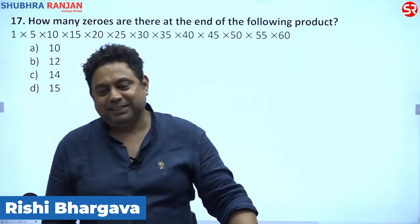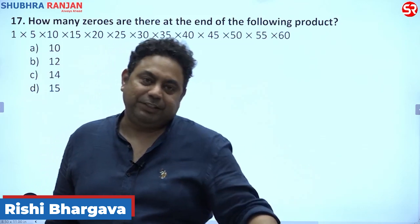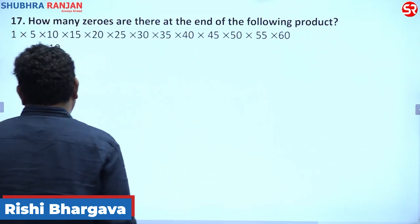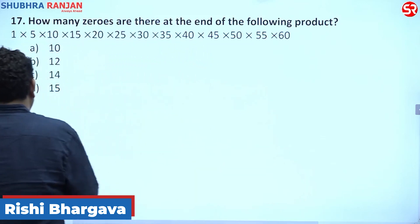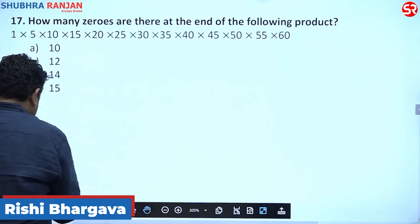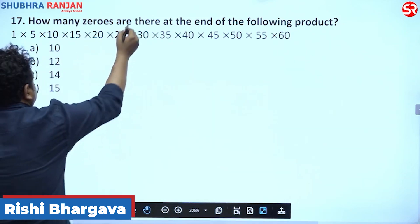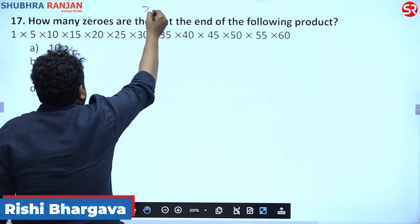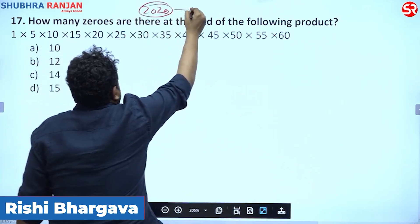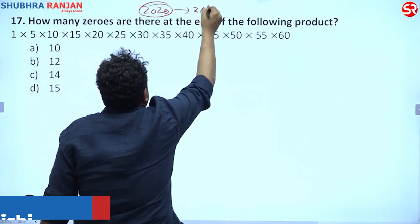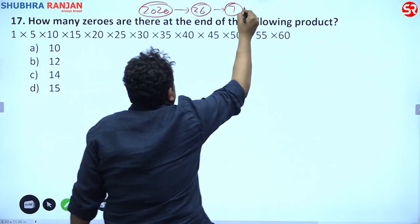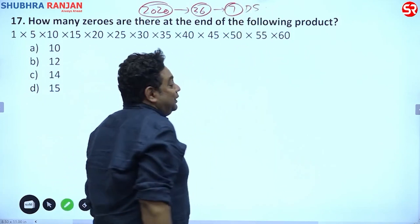Welcome, good afternoon/morning/evening to all of you. I am discussing the 2020 paper — it had 36 questions from quantitative aptitude and 7 questions from data sufficiency, so 43 questions in total.